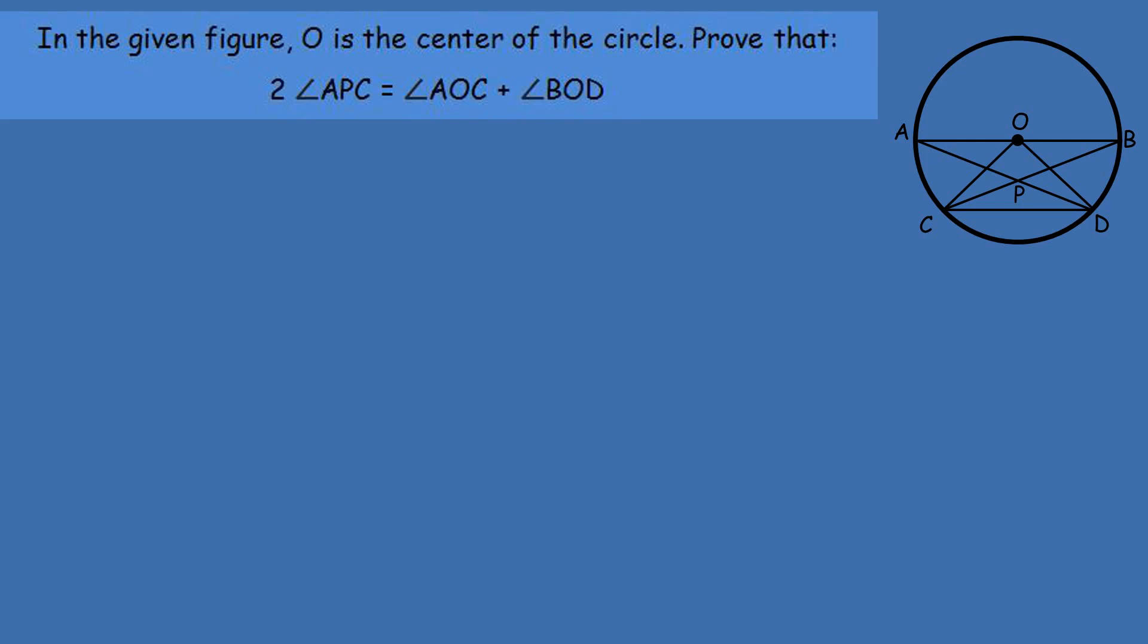In the given figure, O is the center of the circle. Prove that 2 times angle APC is equal to angle AOC plus angle BOD.